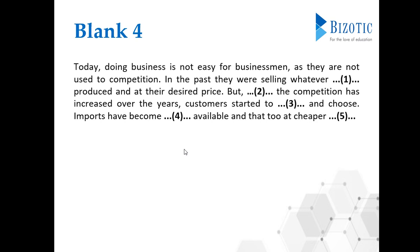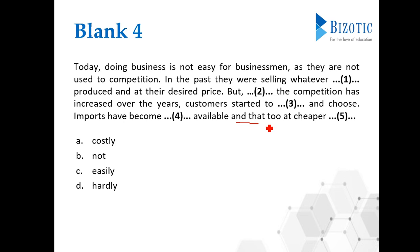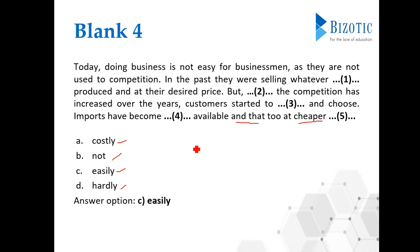Let's look into the fourth blank. The options are: costly, not, easily, hardly. 'Imports have become dash available and that too at cheaper something.' This statement is connected with 'and', so both parts should carry a similar meaning. The hint word here is 'cheaper'. 'Hardly available' — wrong. 'Costly available' — we don't say that. 'Not available' — we don't say that either. 'Easily available and that too at cheaper something' — so 'easily' is the correct answer.